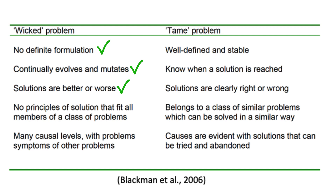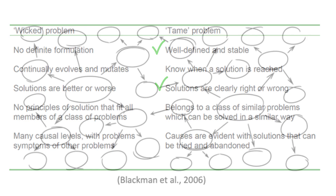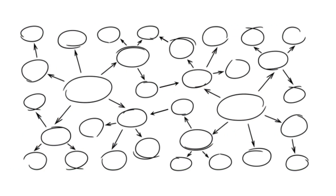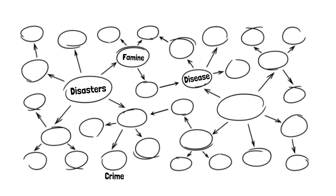This is in contrast to tame problems that tend to be well-defined with solutions that are clearly correct. Examples of wicked problems often revolve around issues of social planning, including things like natural disasters, famine, disease, crime, and poverty.